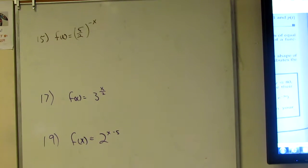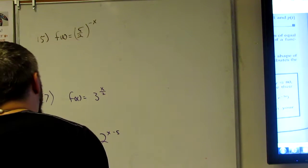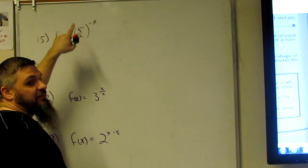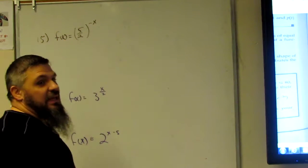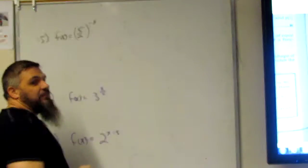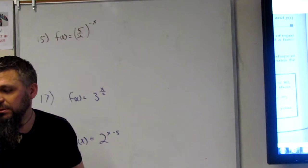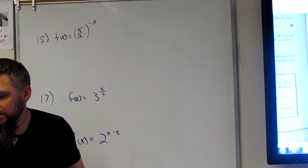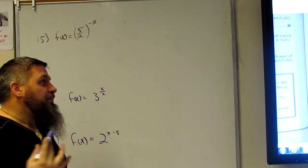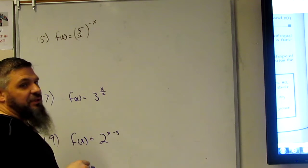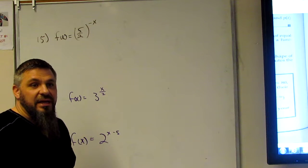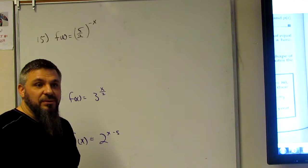Alright, 15 through 19, what we're doing is graphing. So we've got a graph, f of x equals 5 over 2 to the negative x. If we remember, this is an exponential function. And then the other thing we should remember is if it's growth or is it decay. So what is this, growth or decay?